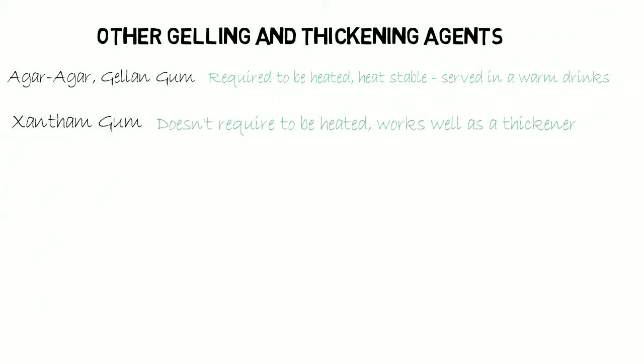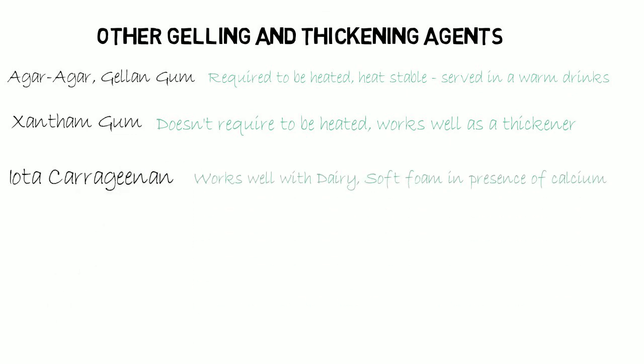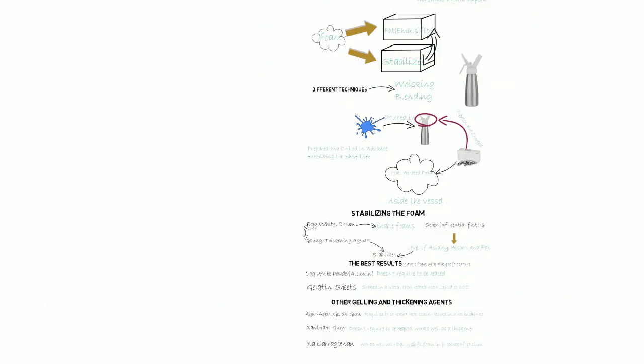Xanthan gum doesn't require liquid to be heated first and works very well as a thickener to stabilize foams. Iota-carrageenan works very well with dairy and creates soft foam in the presence of calcium.